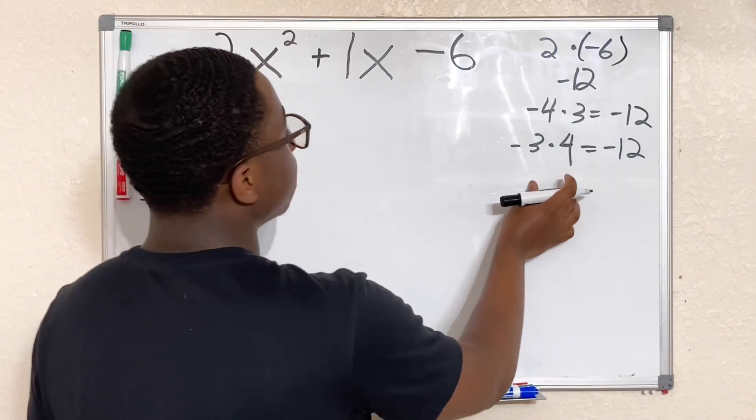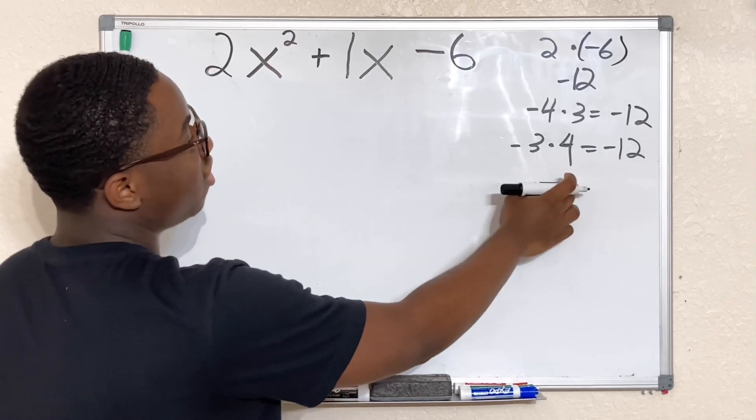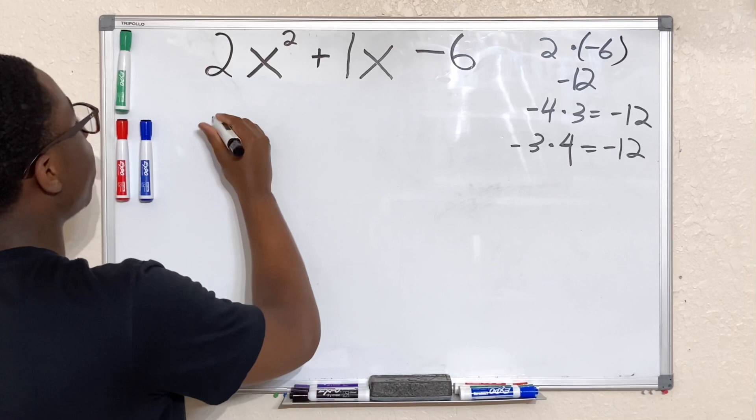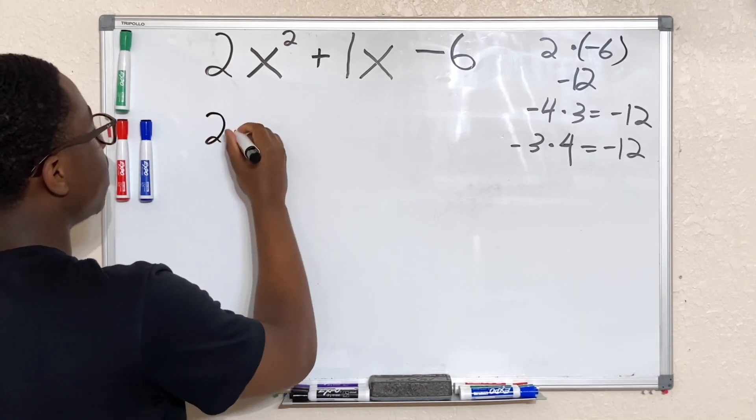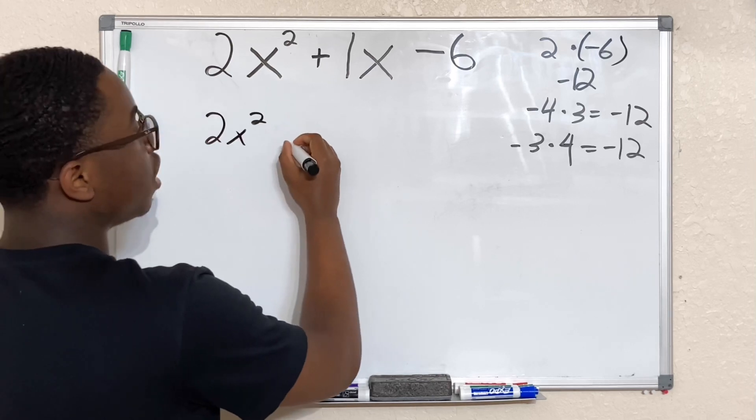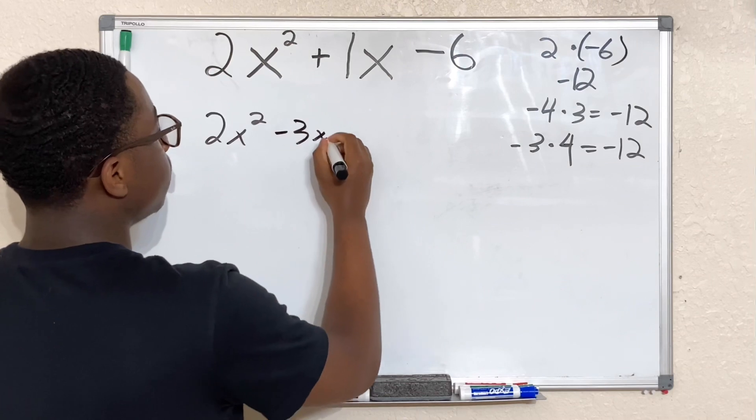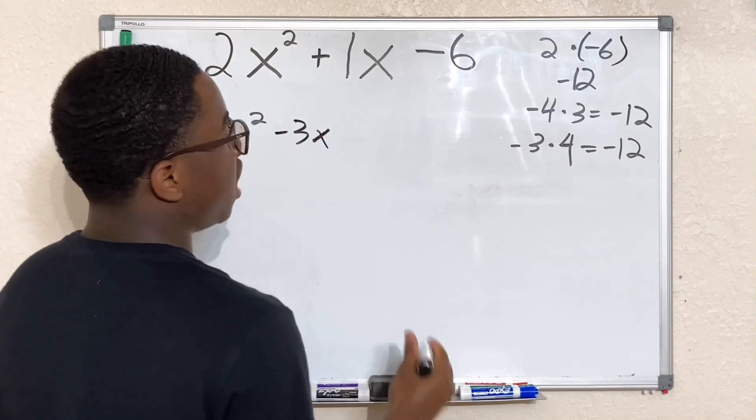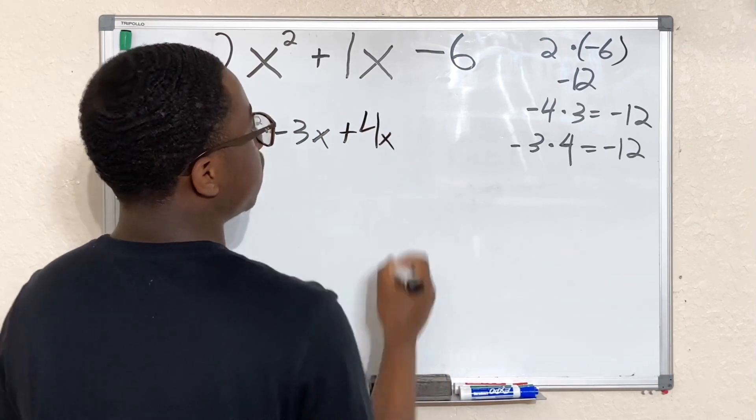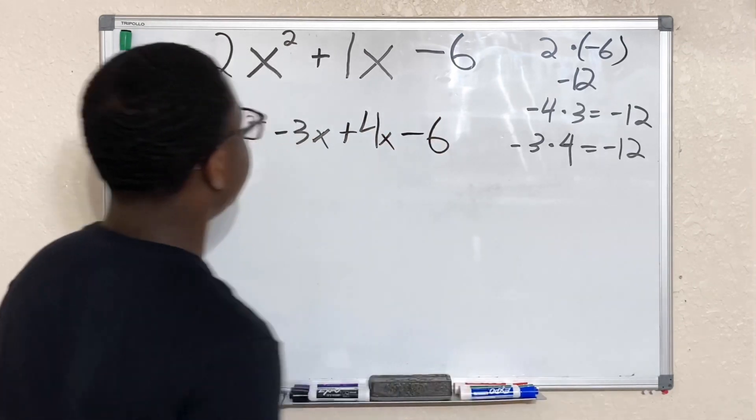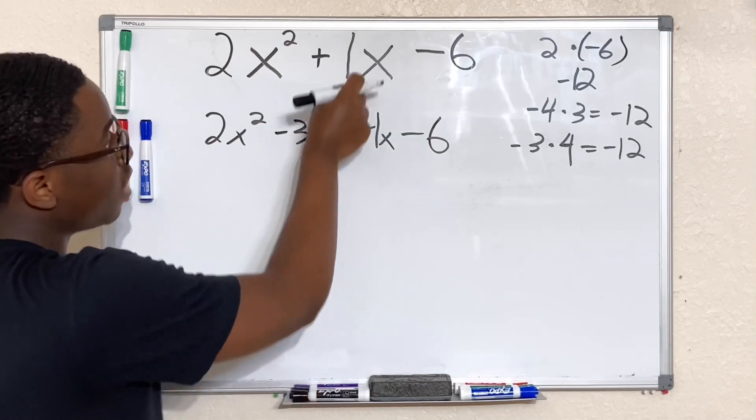So we have our two numbers. So we're going to go ahead and replace 1x with -3x and 4x. Let's make that happen. Bring everything down. We have our 2x squared. Now we're going to have -3x and then we're going to have plus 4x and then minus 6.